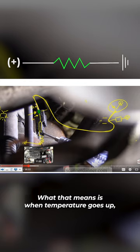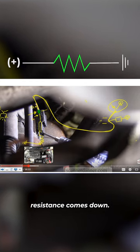Copper wire will act as a positive temperature coefficient resistor. What that means is when temperature goes up, resistance goes up. When temperature comes down, resistance comes down.